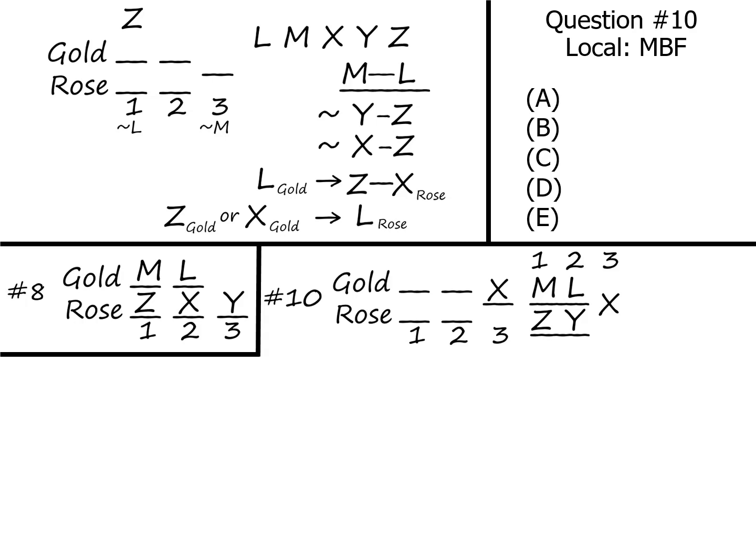The question is asking for what must be false, so something that can never be true. Answer choice A says that L's speech is in the same room as Y's, and from the work that we've already done, we know that L and Y can't be in the same room. They're definitely in different rooms, which means that this is our answer. It's something that can't be true, something that must be false.